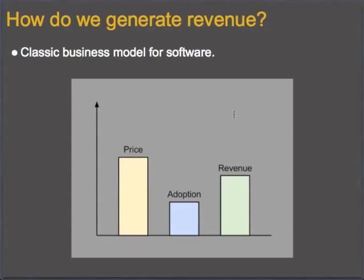In the classic business model for software, you offer something for a price. Here is something we worked really hard on — we spent millions of dollars developing this. It's worth something, and people want to buy it. So you put a price tag on it, and you're going to get some takers — people that say that is valuable and will pay for it. So you get adoption. Your rate of adoption and your price fall into their own levels, and from that you generate revenue. That's the classic model: you sell something, people buy it, and you generate revenue.